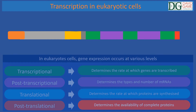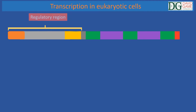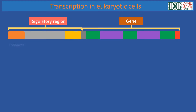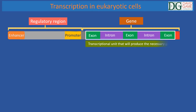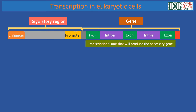A transcriptional unit in eukaryotic cells has different elements, including the enhancer, which is a DNA sequence near or within a gene; the promoter, which is a region of DNA that binds to one or more proteins that regulate transcription; and a transcriptional unit, which is a region of DNA that contains both introns and exons that will produce the necessary gene.